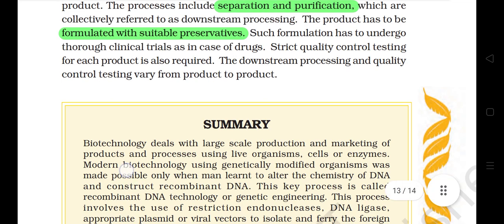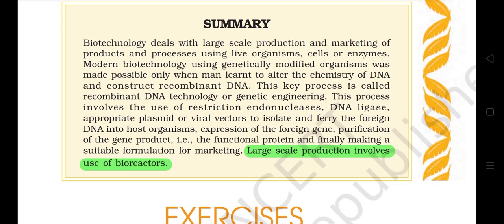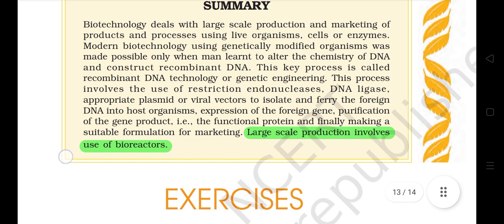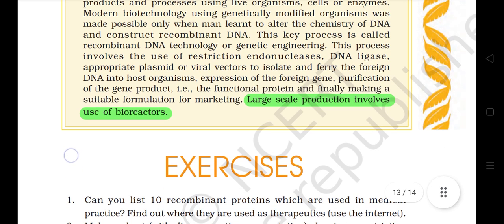Summary. Biotechnology deals with large-scale production and marketing of products and processes using live organisms, cells, or enzymes. Modern biotechnology using genetically modified organisms was made possible only when man learned to alter the chemistry of DNA and construct recombinant DNA — a key process called recombinant DNA technology or genetic engineering. This process involves the use of restriction endonucleases, DNA ligase, appropriate plasmid or viral vectors to isolate and ferry the foreign DNA into host organisms, expression of the foreign gene, purification of the gene product (i.e., the functional protein), and finally making a suitable formulation for marketing.